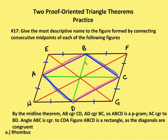Now I draw these green lines BD and AC. I see that BD is congruent with FG and also with EH. And AC is congruent as well with EF and HG. I know that this is a rhombus, so all sides are congruent. So now AC and DB are also congruent. If I have a parallelogram where the diagonals are congruent, then the figure is a rectangle. So the answer is that the most descriptive name for the figure formed by connecting the consecutive midpoints of a rhombus is a rectangle.